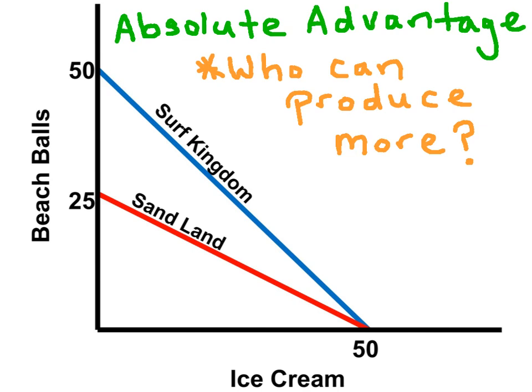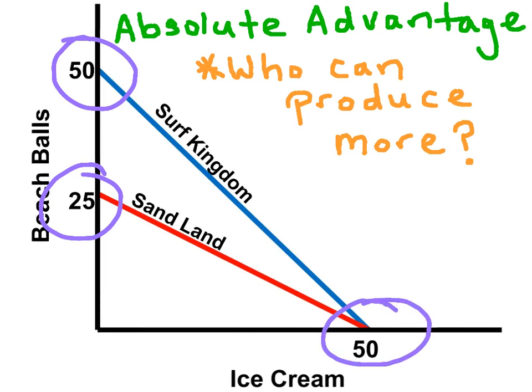Now let's go over Absolute Advantage, or who can produce more. If Surf Kingdom put all their resources into beach balls, they can produce 50 of them. Sandland, if they put all their resources into beach balls, they can produce 25. Because Surf Kingdom can produce more beach balls than Sandland, Surf Kingdom has the Absolute Advantage in beach ball production. Now if you notice, when it comes to ice cream, they both can produce 50 units of ice cream, so nobody has the Absolute Advantage in ice cream production.